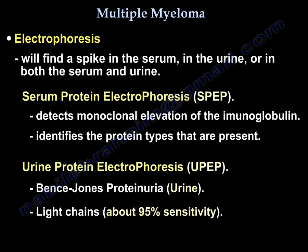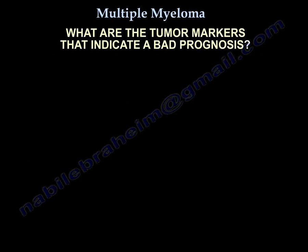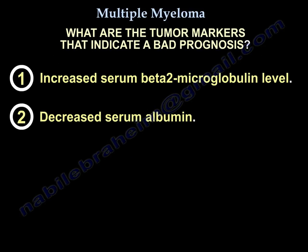Remember SPEP and UPEP. SPEP is serum protein electrophoresis — it detects monoclonal elevation of immunoglobulin and identifies the types of proteins present. UPEP detects Bence-Jones proteinuria, which is a light chain finding with about 95% sensitivity. Tumor markers indicating bad prognosis include increased serum beta-2 microglobulin and decreased serum albumin.